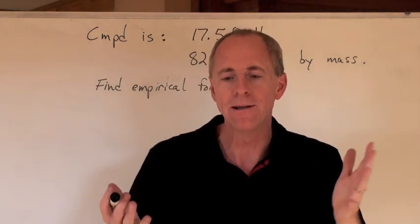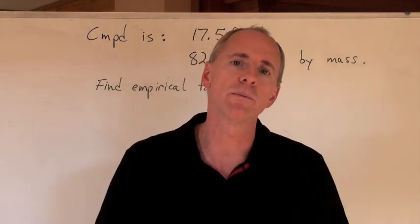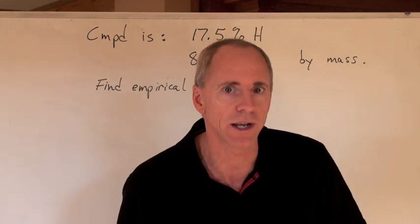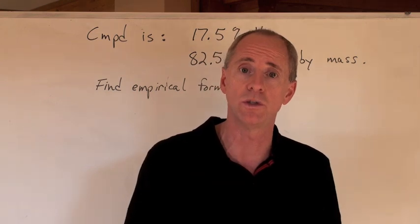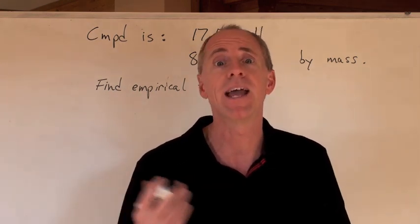Now what does that mean? What's the empirical formula? The empirical formula is just the lowest whole number ratio, broken down formula that you can have for a compound. For instance, everybody should know that hydrogen peroxide is H2O2. Empirical formula? HO.